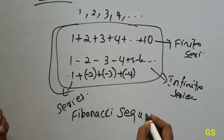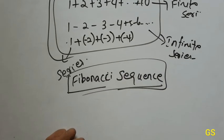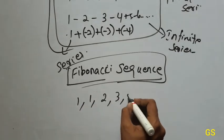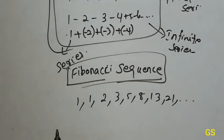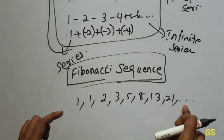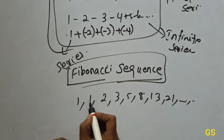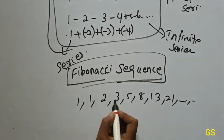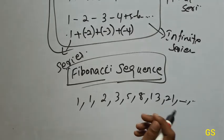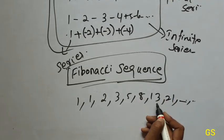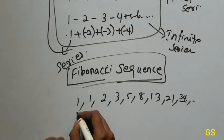Fibonacci sequence — this is a sequence: 1, 1, 2, 3, 5, 8, 13, 21 and so on. This is a pattern follow-up. What is the pattern? 1 plus 1 is 2, 2 plus 1 is 3, 3 plus 2 is 5, 5 plus 3 is 8, 8 plus 5 is 13. Add the previous two numbers to get the next number. 13 plus 8 is 21, 21 plus 13 is 34.